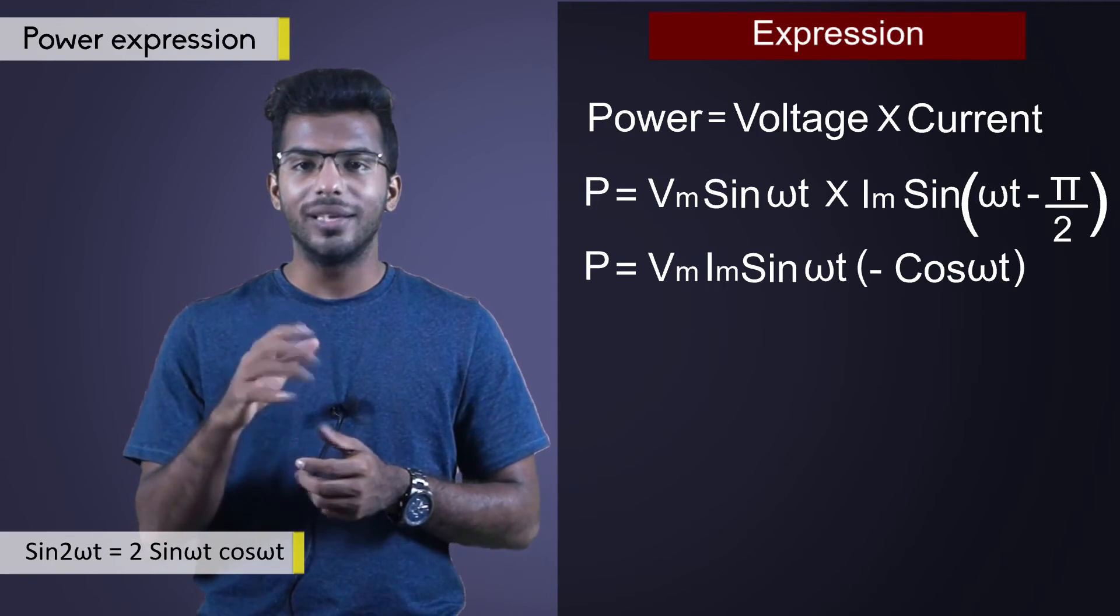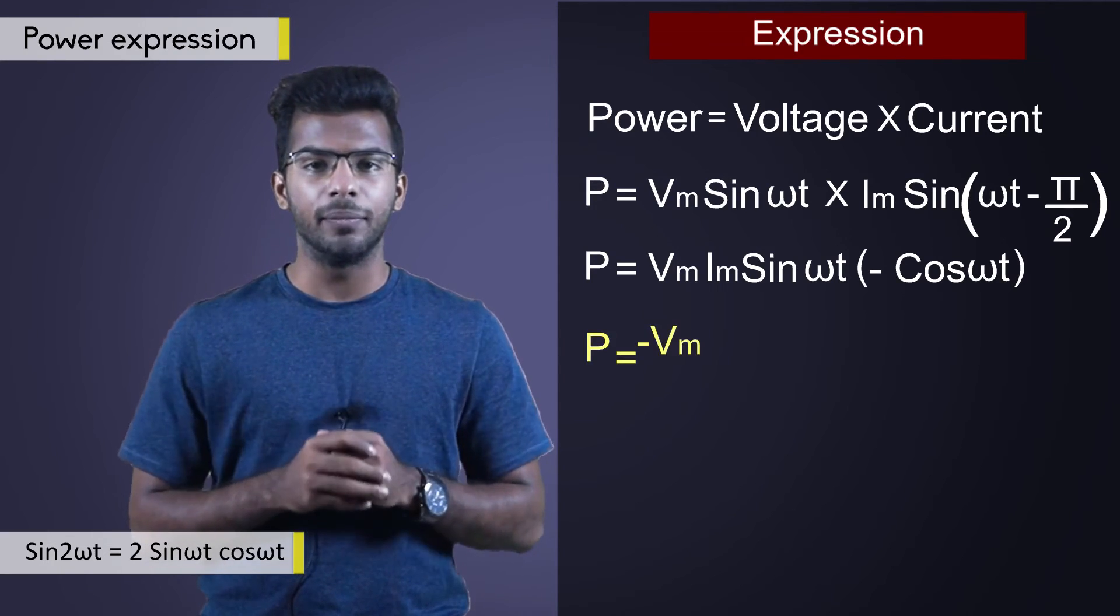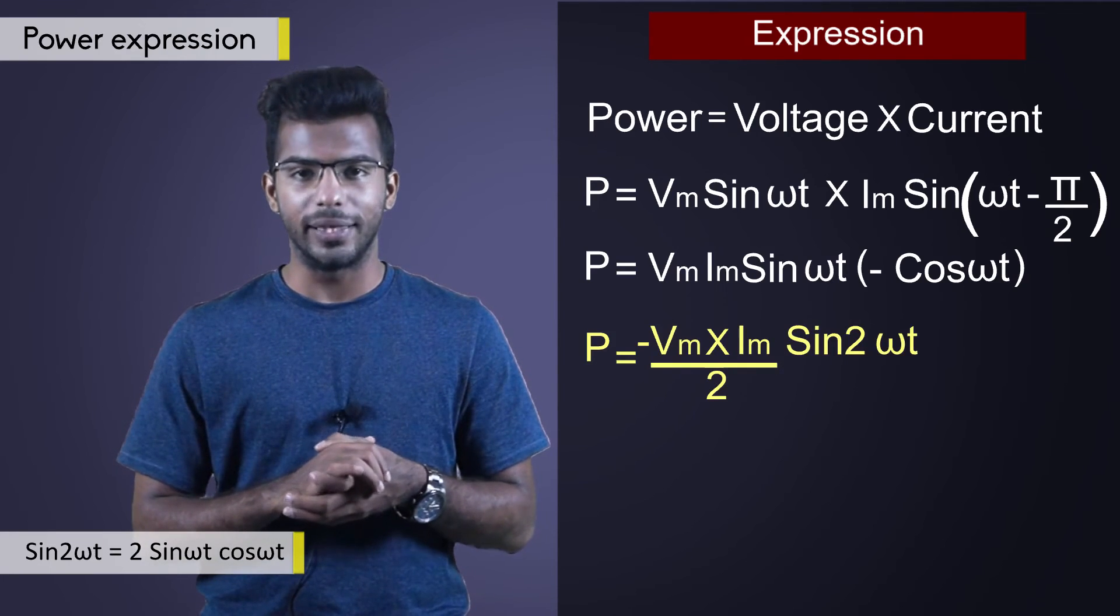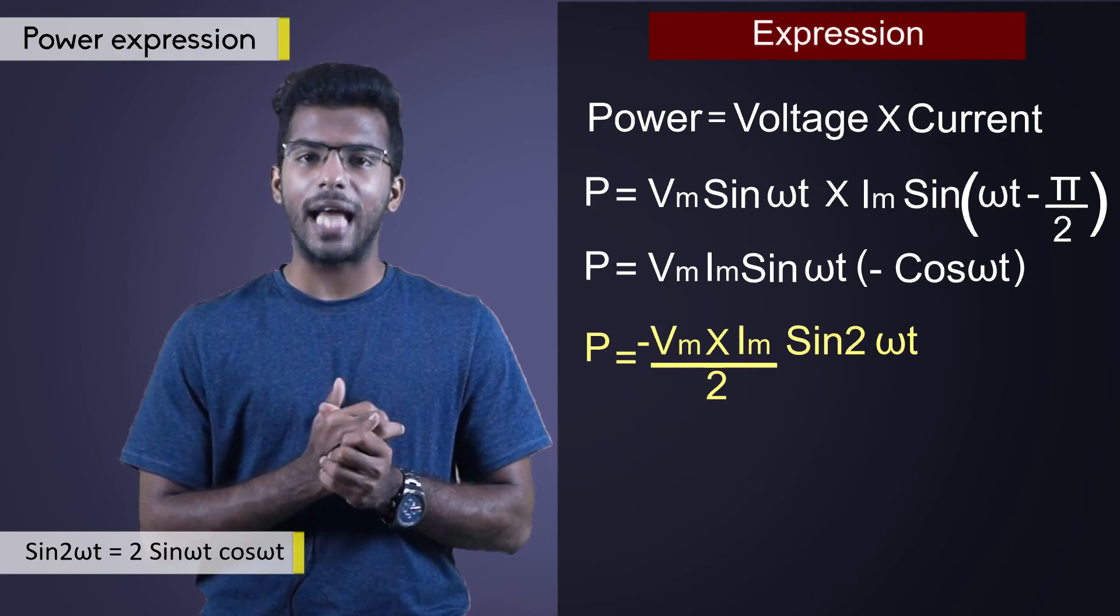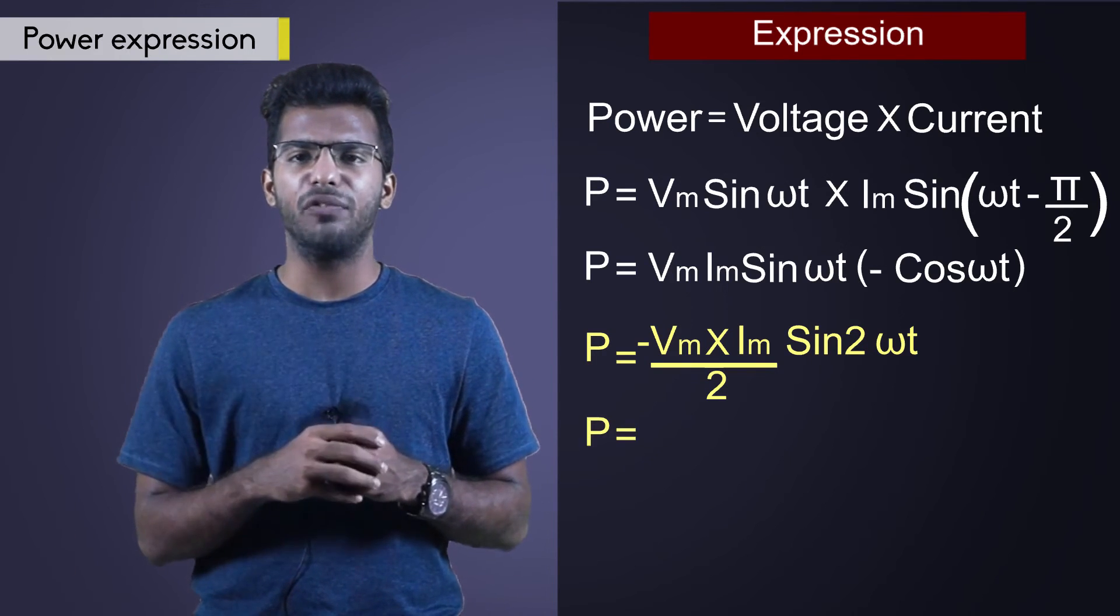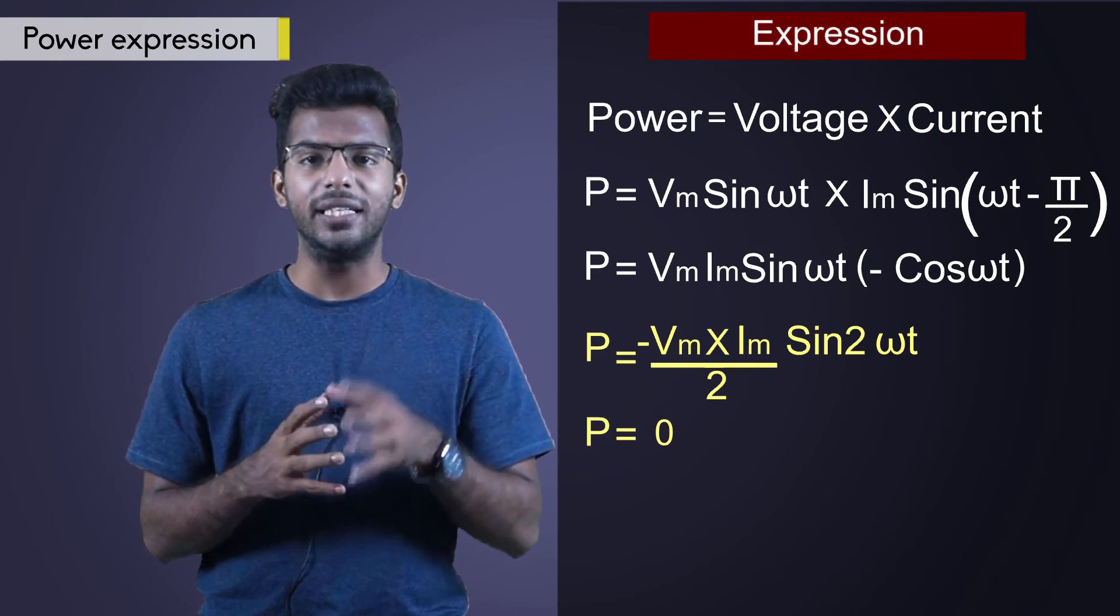Therefore, power is equal to Vm Im divided by 2 into sin 2 omega t. If we integrate and calculate the power over one complete cycle, we will get power value as 0 due to sin term in the power equation.